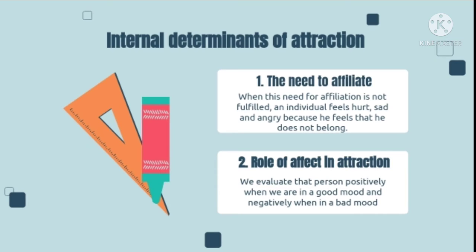Second: Role of Affect in Attraction. This happens when another person is simply present at the same time that a person's emotional state is aroused by someone or something. We evaluate that person positively when we are in a good mood and negatively when in a bad mood. Examples of this phenomenon can be found in experiments on subliminal perception of pleasant versus unpleasant pictures. The explanation for this is based on classical conditioning.